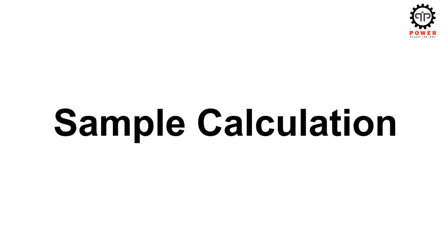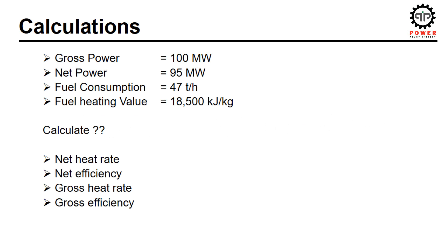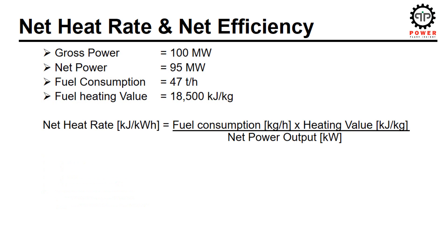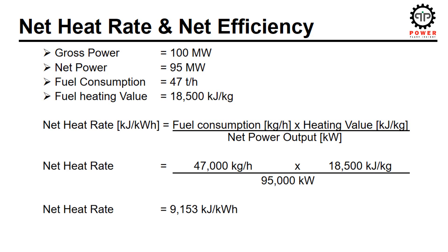Let us now apply all the concepts in a sample calculation. A power plant has a gross power output of 100 MW and a net power output of 95 MW — the balance of 5 MW is the house load. Fuel consumption is 47 tons per hour with a heating value of 18,500 kJ/kg. We need to calculate net heat rate, net efficiency, gross heat rate, and gross efficiency. Putting in the values of fuel consumption and heating value and dividing by net power, we get a net heat rate of 9153 kJ/kWh.